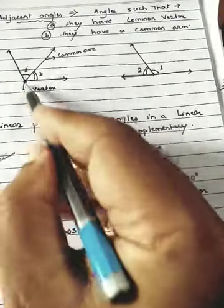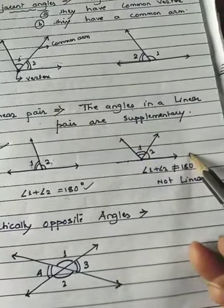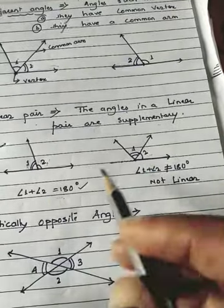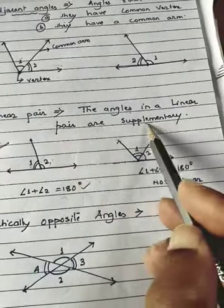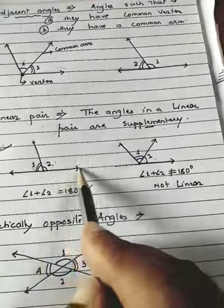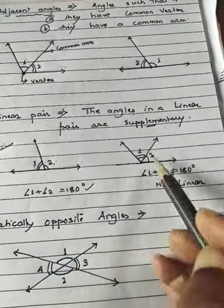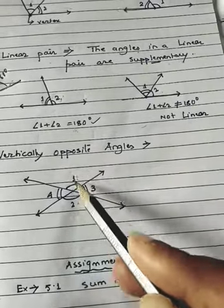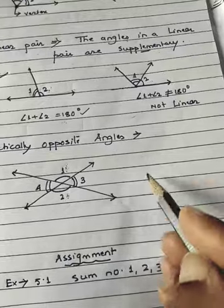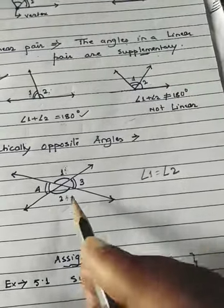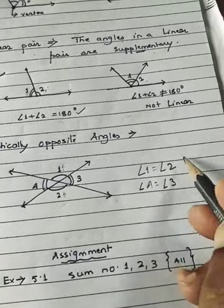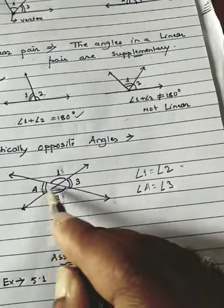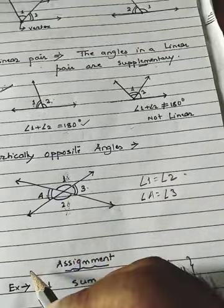A linear pair must lie on a straight line. If the angles are not on a straight line, we cannot say angle one plus angle two is 180 degrees, so it would not be a linear pair. The angles in a linear pair must always be on a straight line. Now, vertically opposite angles: when two lines intersect at one point, the opposite angles are equal. Angle one equals angle two, and angle four equals angle three — these are called vertically opposite angles.